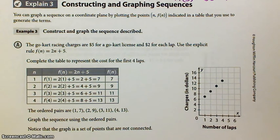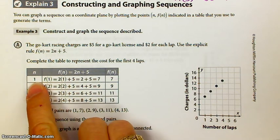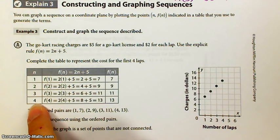Go-kart racing charges are $5 for a go-kart license and $2 for each lap. This refers back to one of our previous examples. Use the explicit rule f(n) is equal to 2n plus 5. So we generated what the value of the term was for each of these positions.